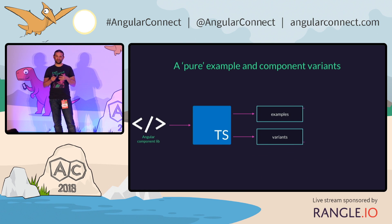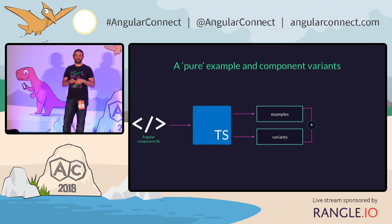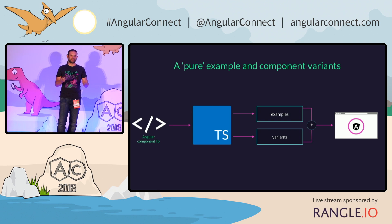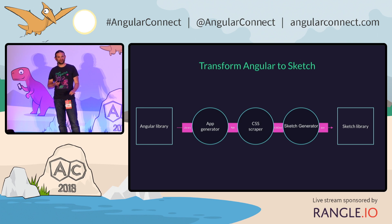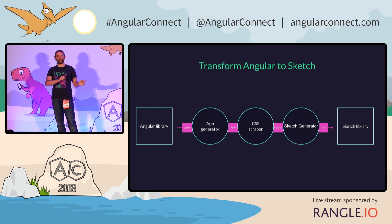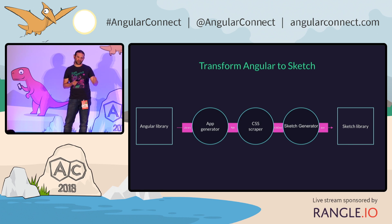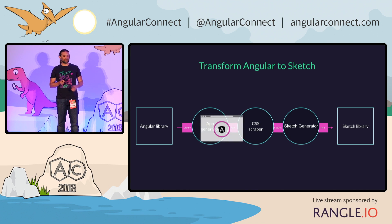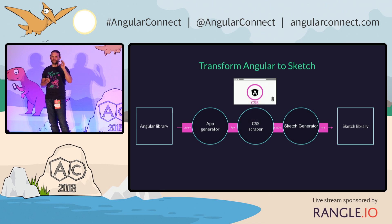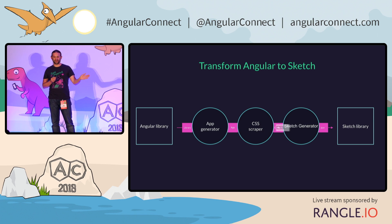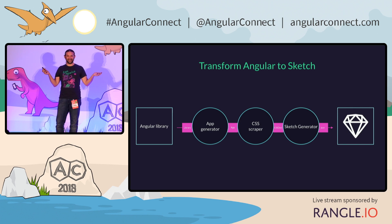In the next step, we take everything, combine it, and generate simple pages with just one component at a time. We do that for every component and generate this Angular component application that we run in CI. So we've made the full journey from the Sketch symbol library to the Angular component library — and the cool thing is, we can fully automate that. When we make a change like a blue color for our previously green button, once this commit happens on master in our component library, CI kicks off and the new code is sent to the app generator.